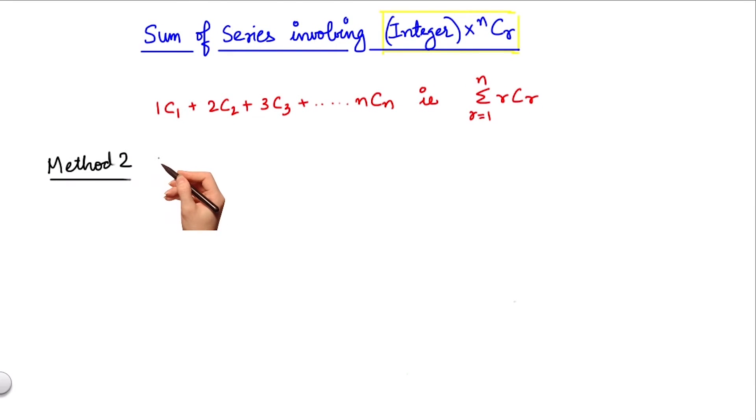The second method to find the sum of this series involves the use of calculus. We start with the expansion of the binomial series (1+x)^n equals c0 plus c1x plus c2x² until cnx^n. And then we can differentiate both these sides with respect to x.